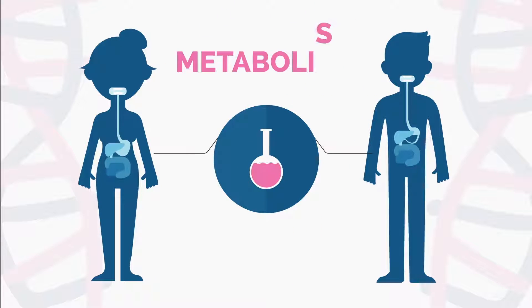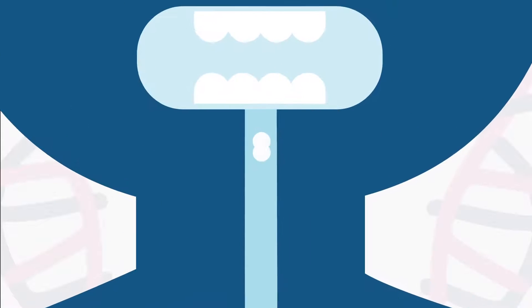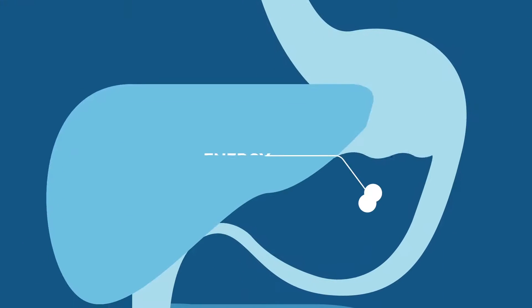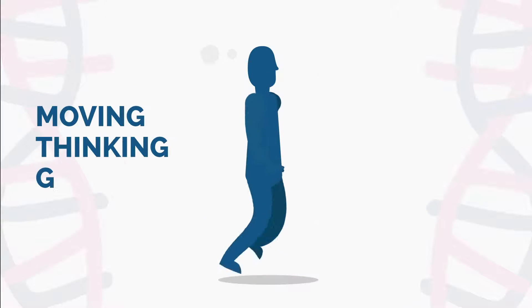Metabolism is a collection of chemical reactions that take place in the body's cells. This converts the food we eat into the energy needed to power everything we do, from moving to thinking to growing.